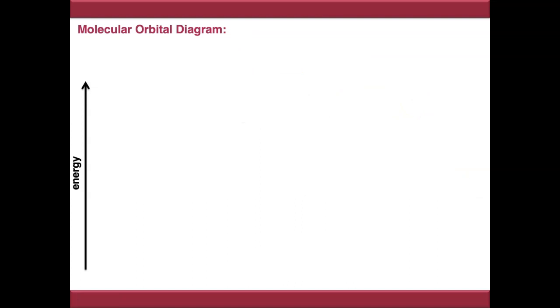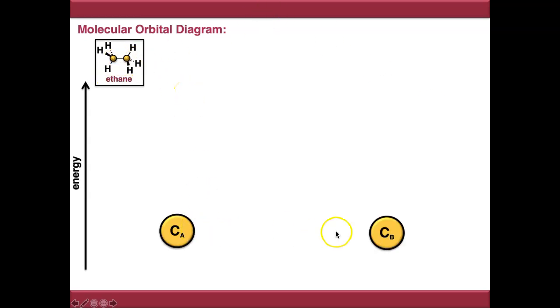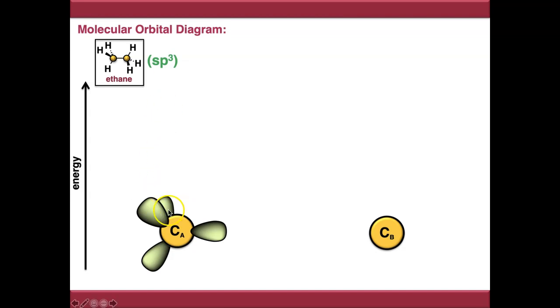Now we'll look at a slightly more complicated and more relevant example for organic chemistry: the MO diagram of carbon, going through the three different hybridization states. Starting with sp3 hybridization, we'll use ethane as an example. The two carbon atoms in ethane are both sp3 hybridized. All of the sp3 hybridized orbitals point at the positions of a tetrahedron, all orbitals are degenerate — equivalent in energy — and carbon has four valence electrons.